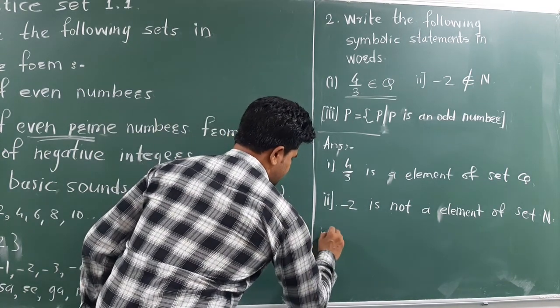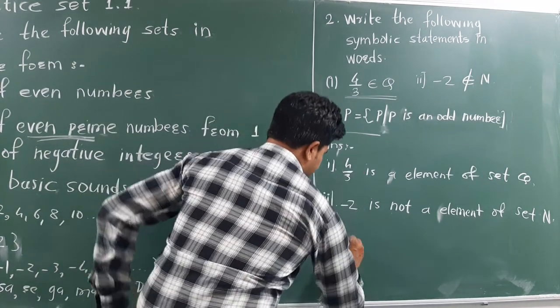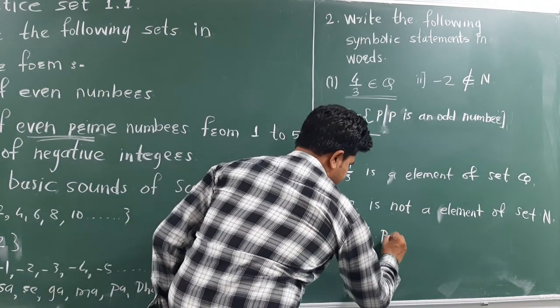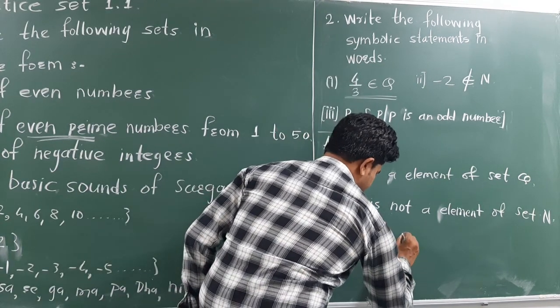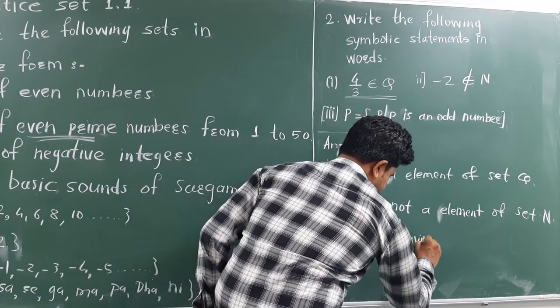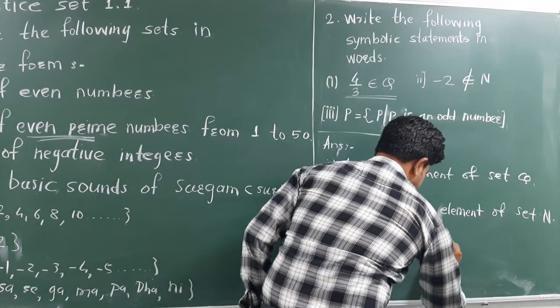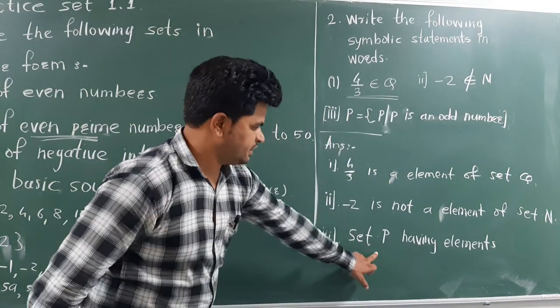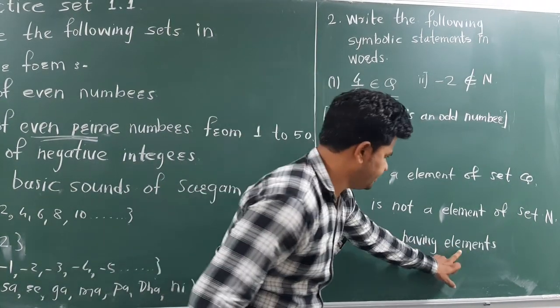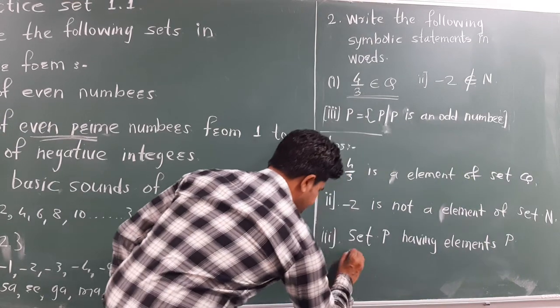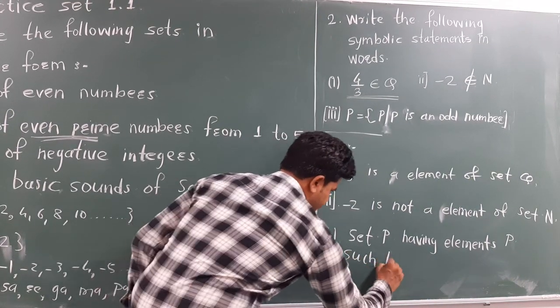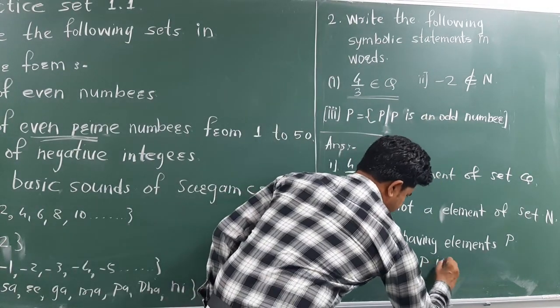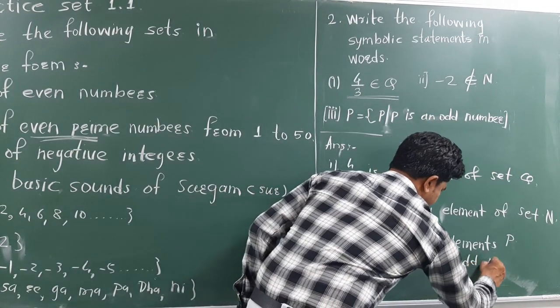In set P, set P containing P elements, or having, set P having or containing elements P, such that, such that, P is odd number. P is odd number.